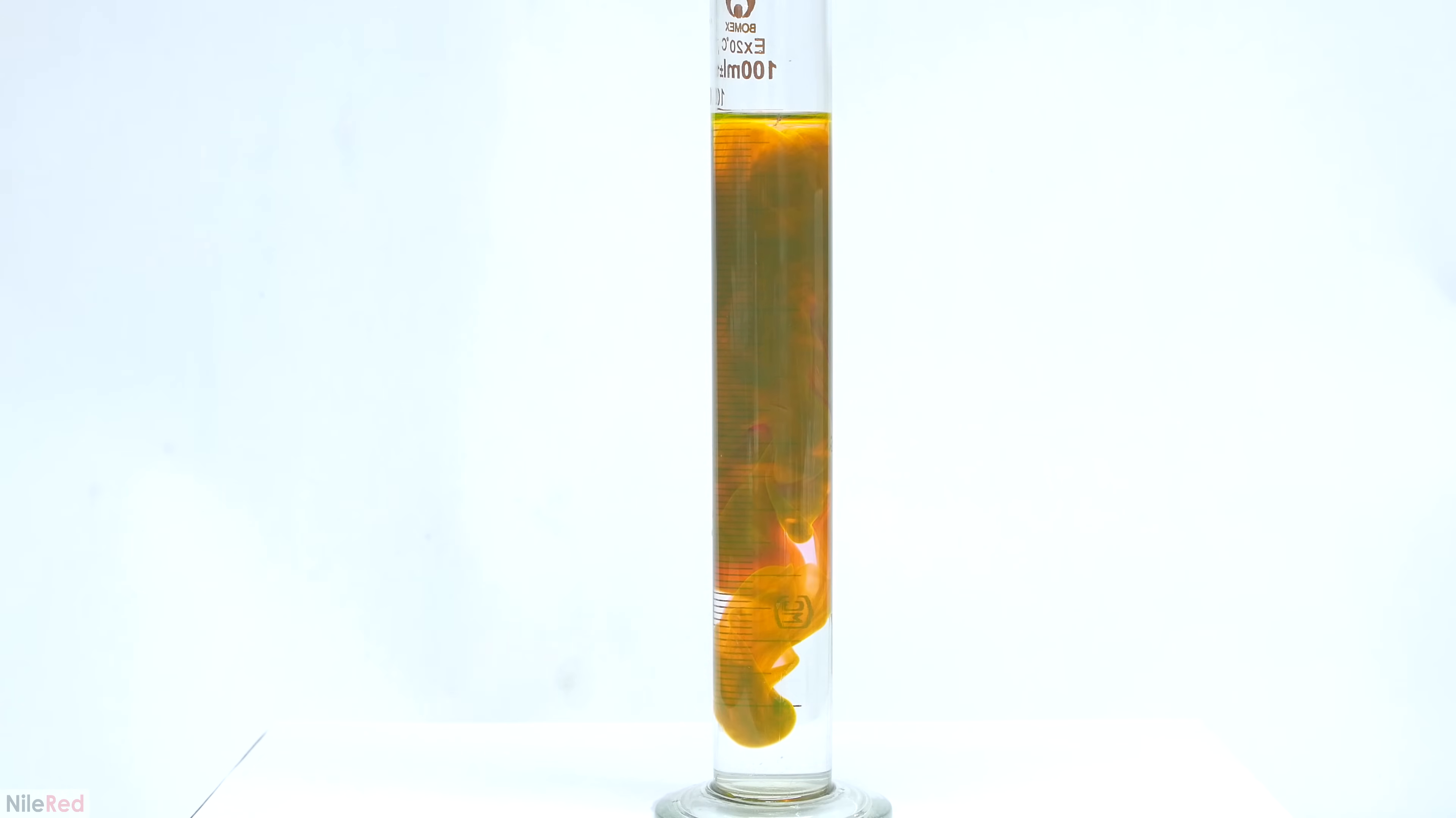Eosin is a pretty commonly used dye in biology and histology to stain tissues before looking at them under the microscope. For this preparation we start with a molecule called fluorescein and we need to throw some bromines onto it.